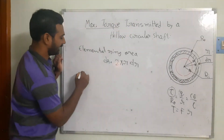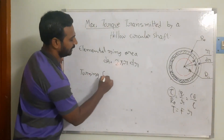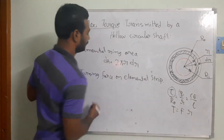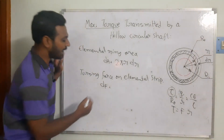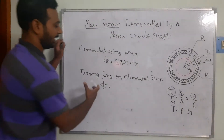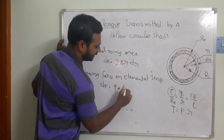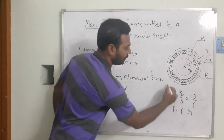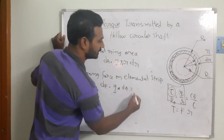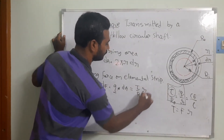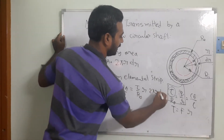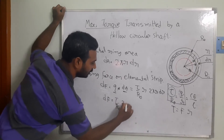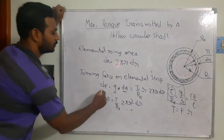Now we find the turning force acting on the elemental strip. The elemental force df = q·da. Since q = (τ/R_naught)·r and da = 2πr·dr, substituting gives df = (τ/R_naught)·2πr²·dr. This is the force existing on your elemental strip.